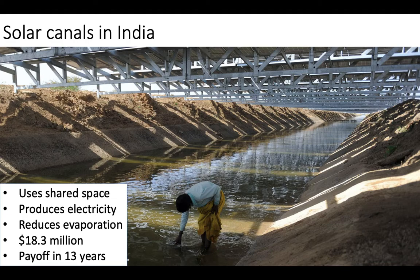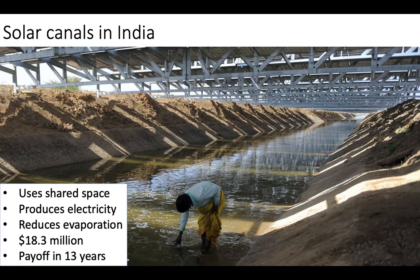A really cool case study: solar canals in India. They've put solar panels atop water canals used for irrigation and drinking water supply. Not only are they sharing space — reducing the footprint needed to produce electricity and harvest water — but they're also protecting the water from sunlight and reducing evaporative water losses. It cost $18.3 million to set up, is expected to pay itself back in 13 years, and has been about six years in operation with wide success. A great example of two things working together synergistically.